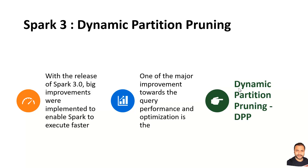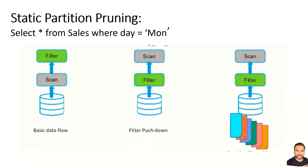As discussed in a previous video, the highlighted features released as part of Spark 3 are centered around optimization of queries. One of the major features is dynamic partition pruning. The whole idea is to ensure that queries only process the required amount of data, and whatever data is not required based on the conditions should be pruned, ignored, and not taken into account for query execution — achieving a substantial amount of performance optimization.